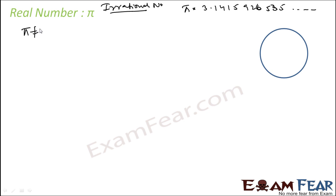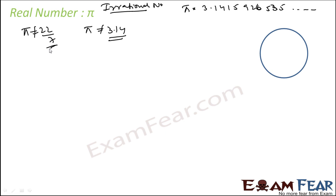Please note: Pi is not equal to 22 by 7. Pi is not equal to 3.14, because these are all rational numbers and Pi is an irrational number. Just for our convenience, we assume Pi is 22 by 7.